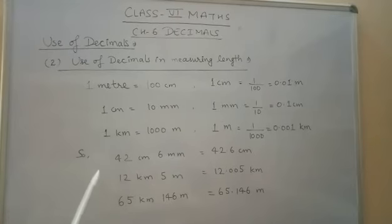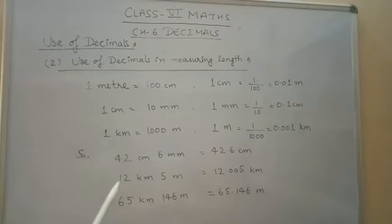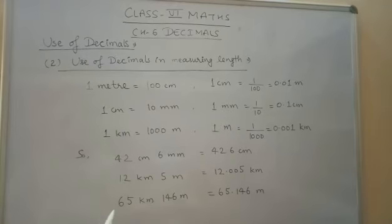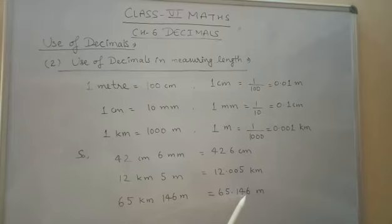Some examples are there: 42 centimeters 6 millimeter, that is 42.6 centimeter. 12 kilometer 5 meter, it is written as 12.005 kilometer. And 65 kilometer 146 meter, that is 65.146 meter.